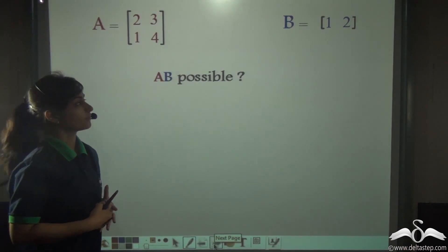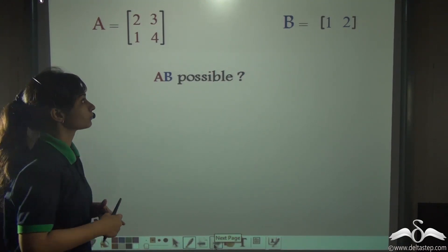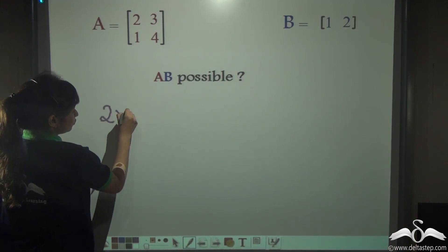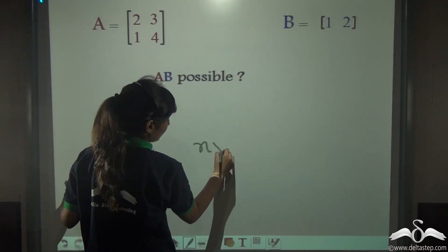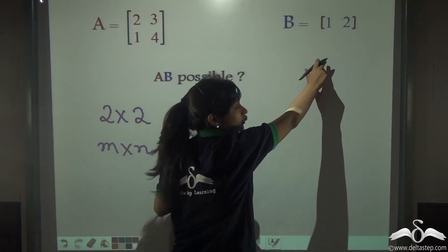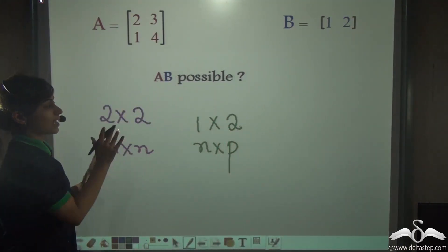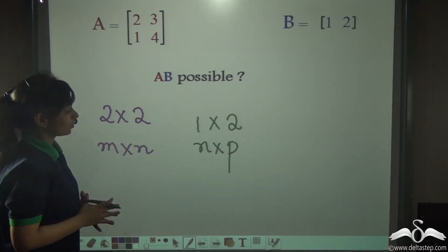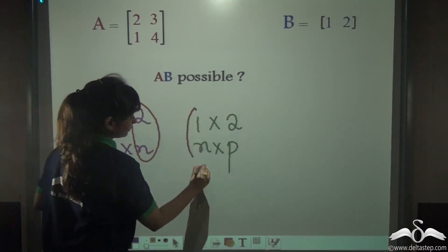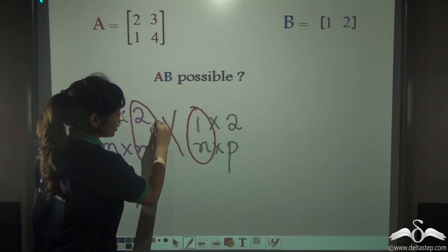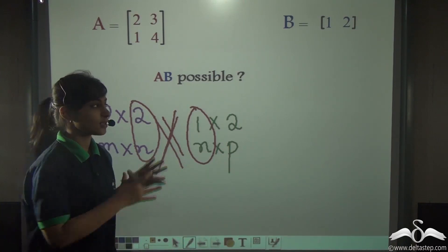Here again we have two matrices. Tell me whether AB is possible or not. A is of order 2 by 2, so M by N is 2 by 2. Matrix B is of order 1 by 2. Are both N values the same? No, the number of columns of A is 2 but the number of rows of B is 1 — they are not the same. So these two matrices cannot be multiplied, and if multiplication is not defined, there is no question of finding the order of the product matrix.